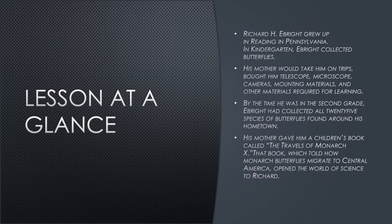Lesson at a glance. Richard H. Ebright grew up in Reading, Pennsylvania. In kindergarten, Ebright collected butterflies. His mother would take him on trips and bought him a telescope, microscope, cameras, mounting material, and other materials required for learning. By the time he was in second grade, Ebright had collected all 25 species of butterflies found around his hometown. His mother gave him a children's book called The Travels of Monarch X, which told how monarch butterflies migrate to Central America, and it opened the world of science to Richard.